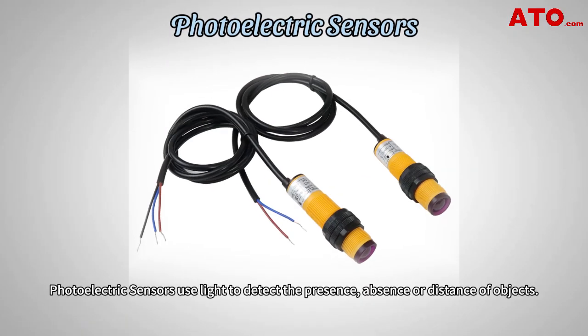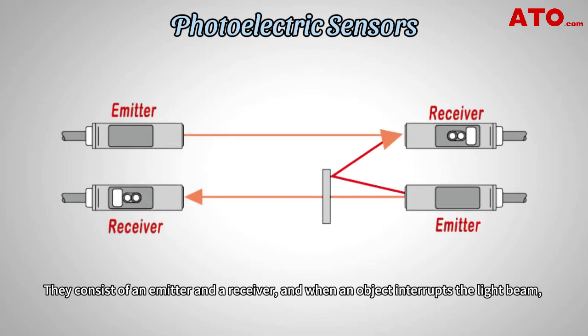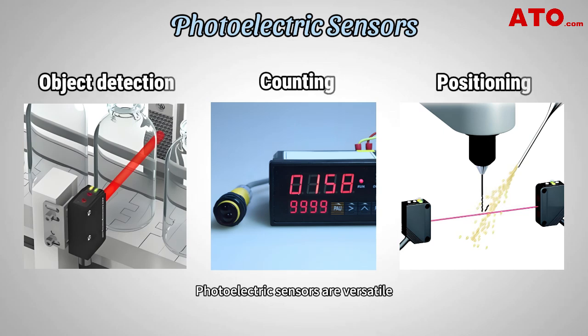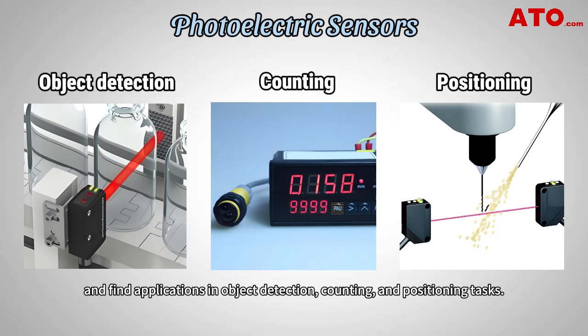Photoelectric sensors use light to detect the presence, absence or distance of objects. They consist of an emitter and a receiver, and when an object interrupts the light beam, it triggers the sensor's output. Photoelectric sensors are versatile and find applications in object detection, counting and positioning tasks.